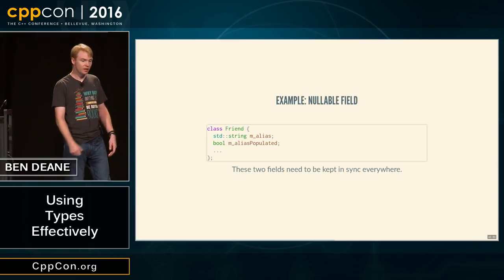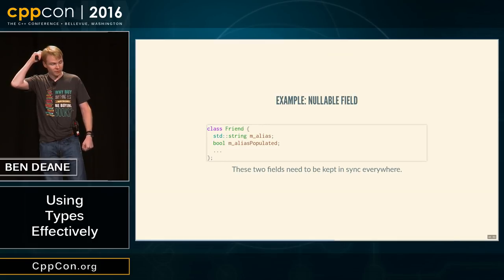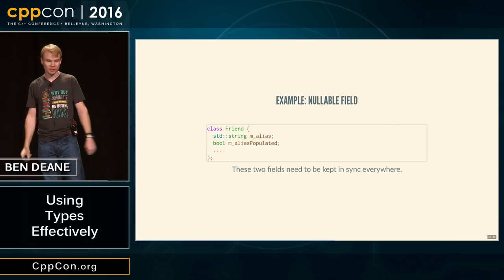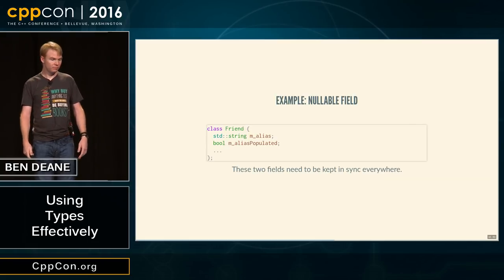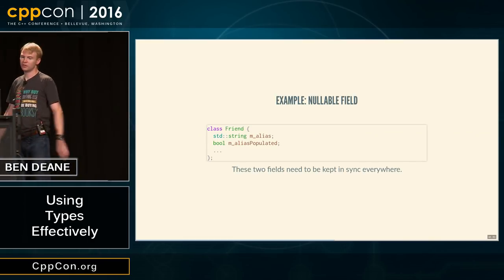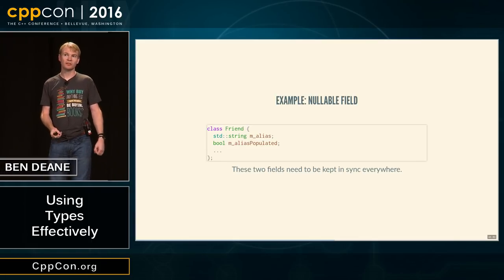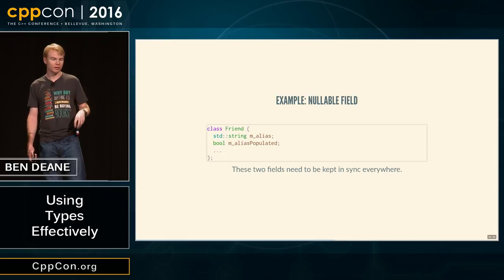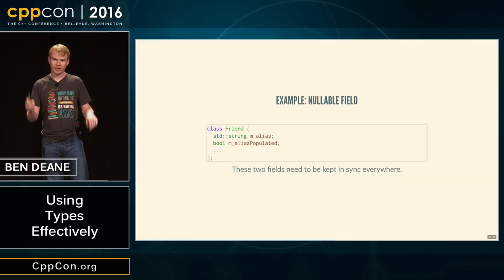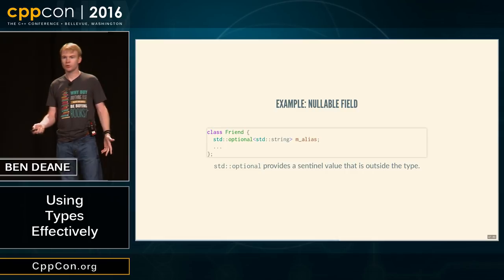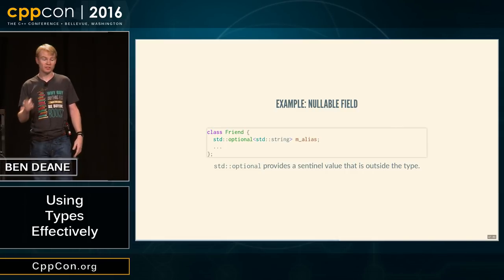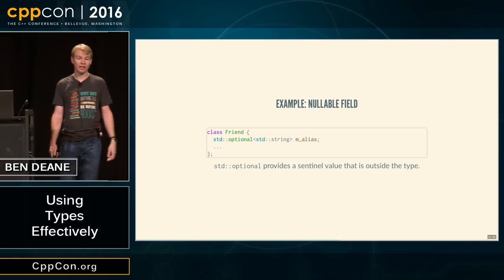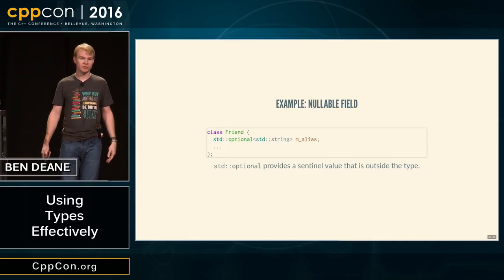Here's another example: a nullable field. If you have a social network with a friend construct where you can give them an alias stored on the server, you don't know yet whether you've got the alias from the server. These two fields — alias and alias_populated — need to be kept in sync everywhere. There's a temptation to treat empty aliases as unpopulated, but that might not be correct. If we replace this with an optional, we get exactly that behavior. It's not possible for two fields to get out of step, because there's only one field.